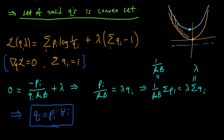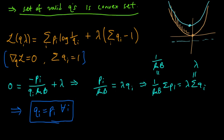We're basically there, because Lagrange told us that solving these equations gives us a critical point of the constrained function. Since the constrained function is strictly convex and we get a critical point, that is a global minimum for the constrained problem. And of course, we did our change of variable, so the lengths should be l_i = log base b of 1 over q_i, which gives us l_i = log base b of 1 over pi.